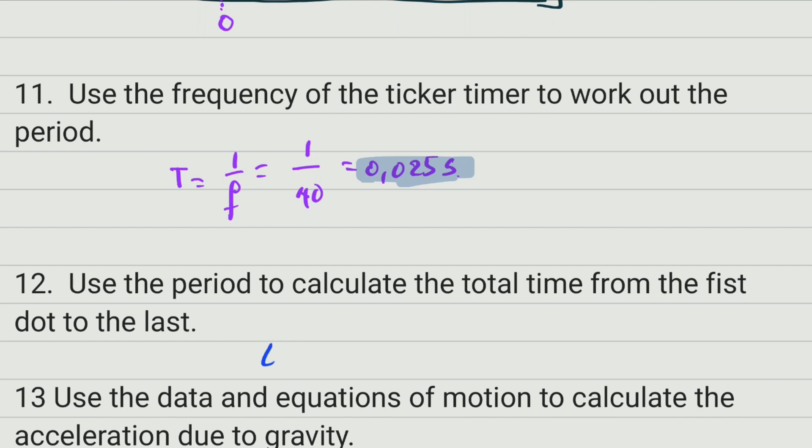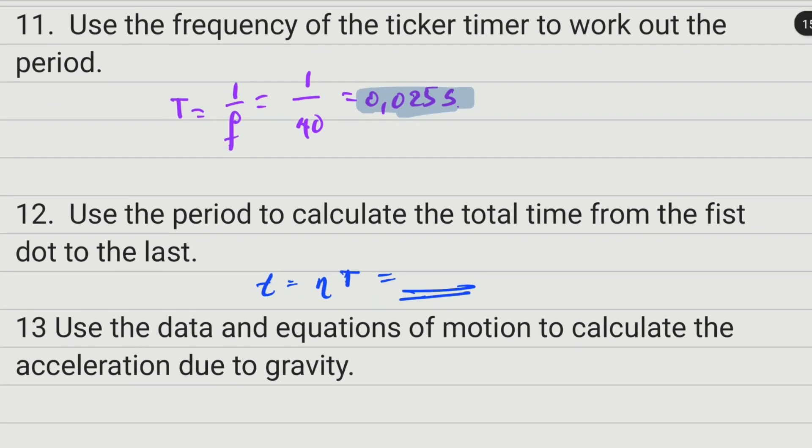The total time will equal the number of dots - be careful, we're looking for the intervals - multiplied by the period. We're going to do it when we do the experiment to see how many dots we have.